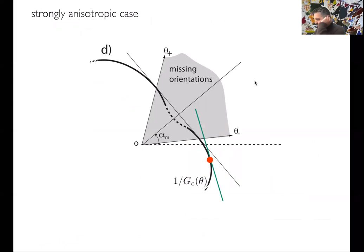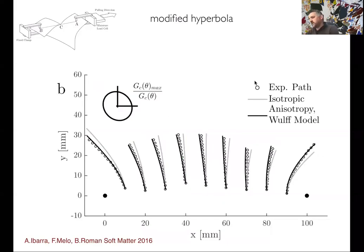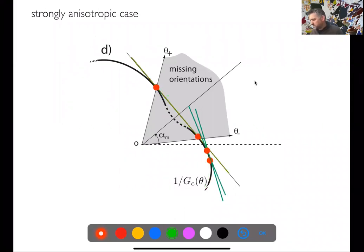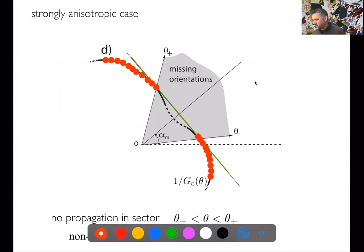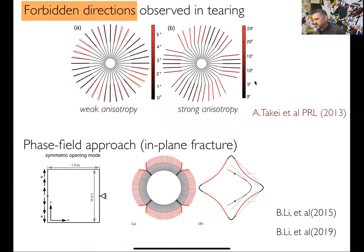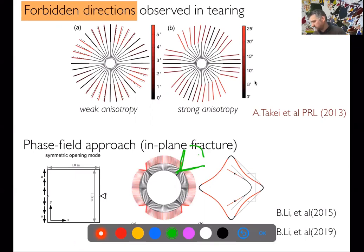An interesting thing in this representation: sometimes the 1/Gc curve becomes non-convex, and in that case some directions become forbidden — there is no way to propagate cracks along those directions when anisotropy is too large. This has analogies with the shape of crystals when the anisotropy of the material becomes larger. People using phase-field approaches also found these forbidden directions, where the crack will never propagate.